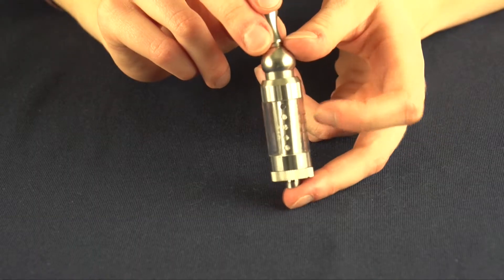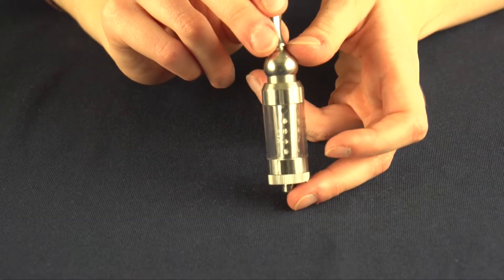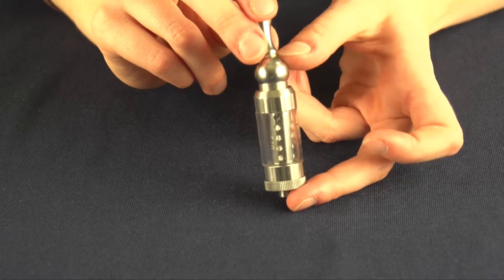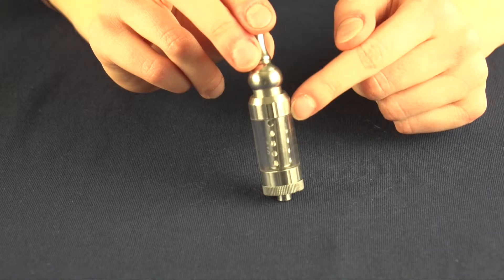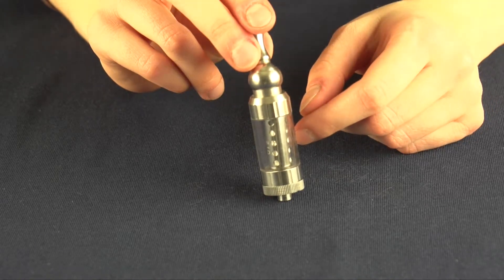Anytime you replace a coil in one of these tanks, let it sit for about two to five minutes to make sure the juice can saturate the wicks. This helps avoid getting any dry hits.